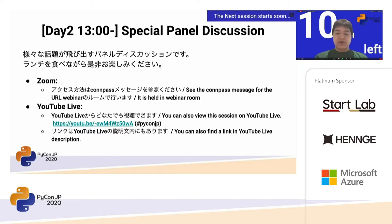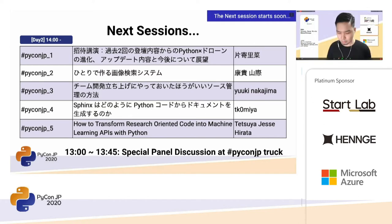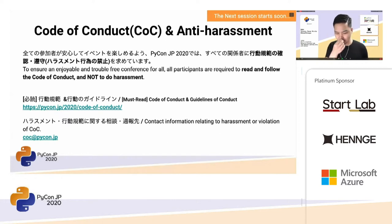So let's turn it over to Jesse-san. The title is How to Transform Research-Oriented Code into Machine Learning API with Python. The presentation time is 13 minutes, including questions and answers.